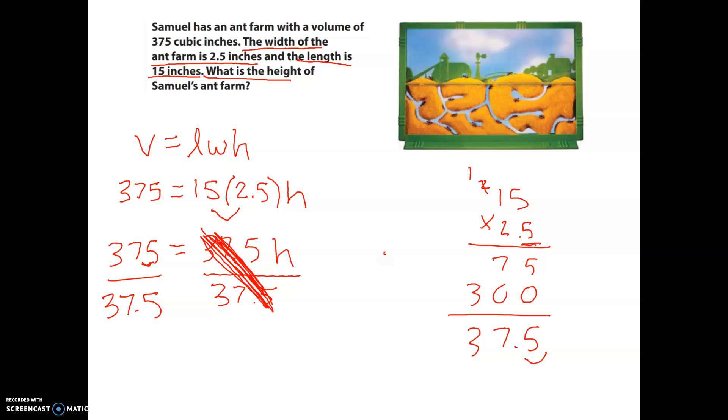So then, let's see. 375 divided by 37.5. I know I can't have a decimal on the outside, so I'm going to move it once to the right to get rid of that. And then I've got to do the same thing on the inside. Move it over once. So I can add a zero right there. All right, then let's think. 375. If I multiply that by 10, that would be perfect. 3,750. All right, so let's see. I've got 10 for my solution. So my equation would be 10 equals h.